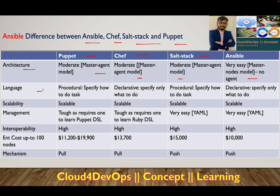In terms of language, Puppet and SaltStack are procedural where you have to specify how to do a task, whereas Chef and Ansible are more of a declarative approach — you specify only what to do, and we have seen that in Ansible.